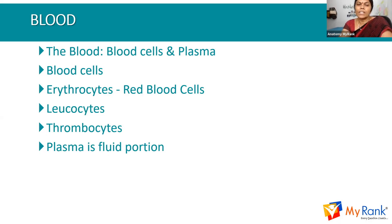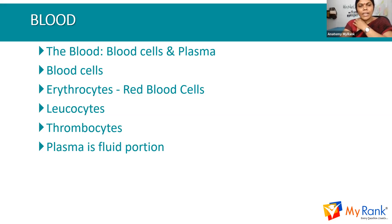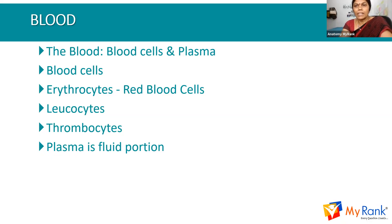Basophils are also granulocytes. Agranulocytes include monocytes and lymphocytes — these are the main agranulocytes. Thrombocytes are platelets and are present adequately in the body. If thrombocytes are less in number, we call it thrombocytopenia.